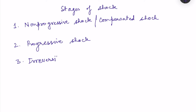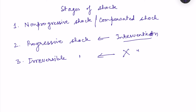Non-progressive or compensated shock means the body has taken care of itself — no further intervention is required from outside. Progressive shock will halt only if intervention is given from outside; if given on time, the shock can be corrected. Irreversible shock means that despite intervention, the shock cannot be stopped and will eventually lead to death of the patient.